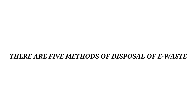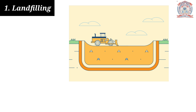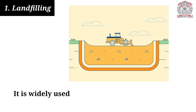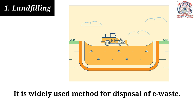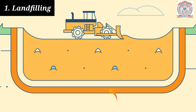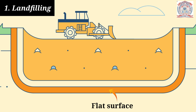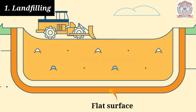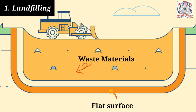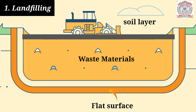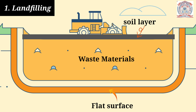There are 5 methods of disposal of e-waste. The first is landfilling. It is a widely used method for the disposal of e-waste. In this method, trenches are made on flat surfaces by removing soil, and waste material is buried in them, which is then covered by a thick layer of soil.